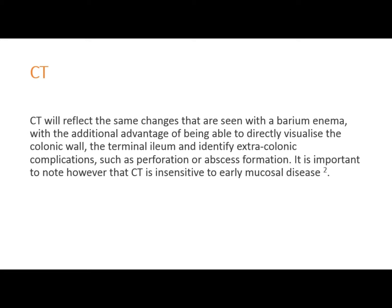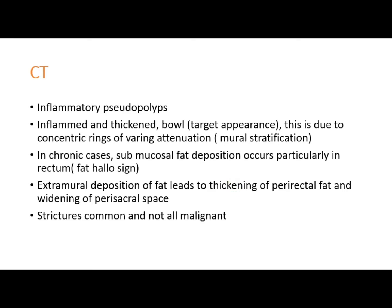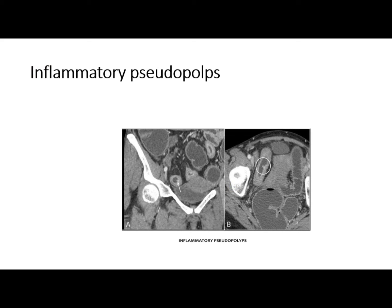CT scan will reflect the same changes discussed with fluoroscopy, and additionally allows direct visualization of the colonic wall, the terminal ileum, and complications such as perforation. There are specific CT signs: inflammatory pseudopolyps, inflamed and thickened bowel wall, and a target appearance. In chronic cases there is a fat halo sign, with extramural fat deposition leading to thickening of the perirectal fat and widening of the perirectal space. On coronal CT you can see mucosal islands and bowel wall thickening.